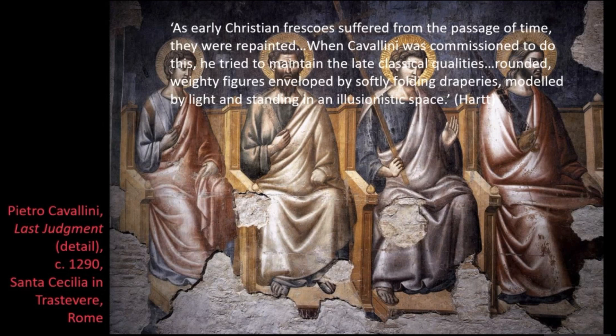This fresco helps to explain why this return to naturalism had come about. As early Christian frescoes suffered from the passage of time, they were repainted. When Cavallini was commissioned to do this, he tried to maintain the late classical qualities — rounded, weighty figures enveloped by softly folding draperies, modelled by light and standing in an illusionistic space. The point Frederick Hart is making here is that it was because Cavallini knew how Roman frescoes were painted and was responsible for repainting them that created the conditions and logic for a new humanised approach to Christian figures.